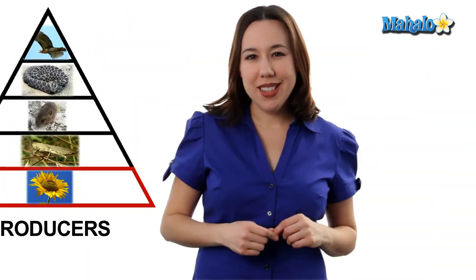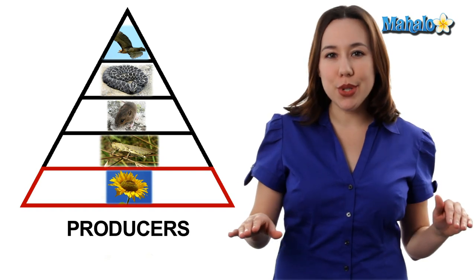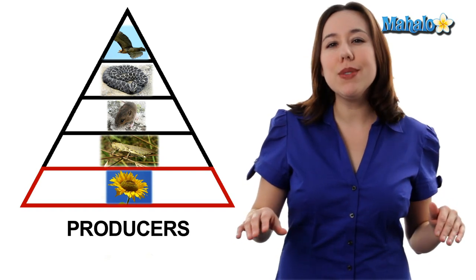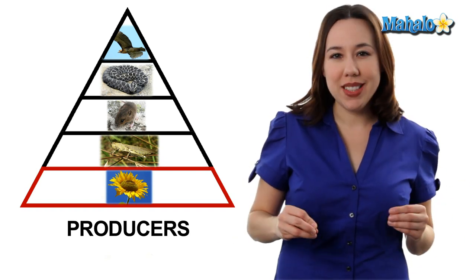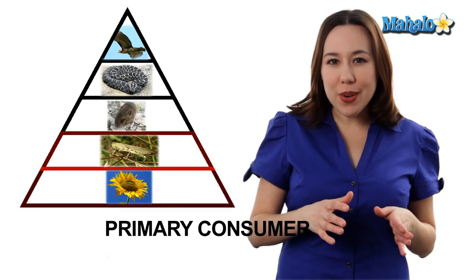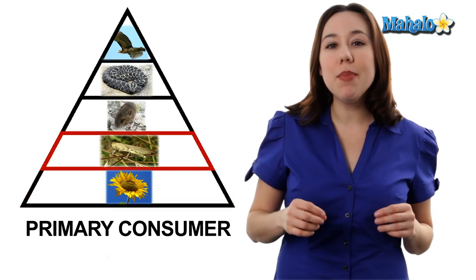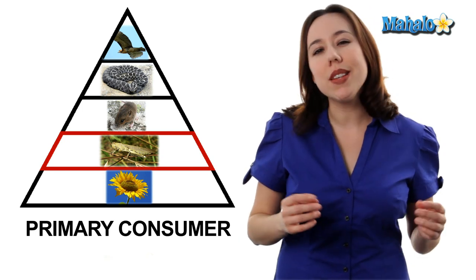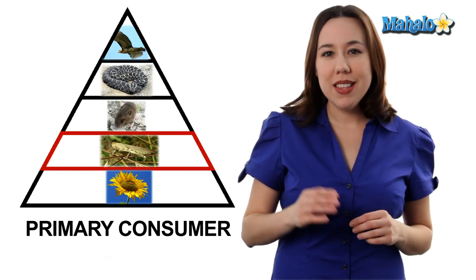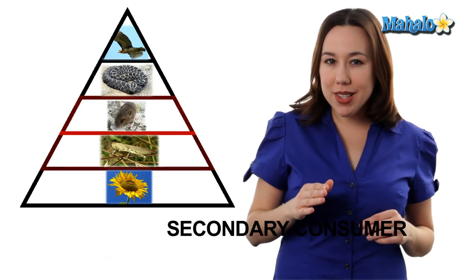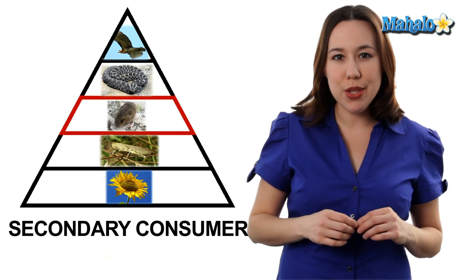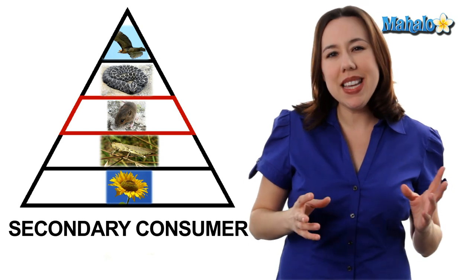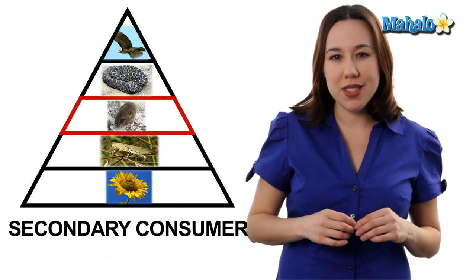Now let's use a real world example to illustrate our concept here. We're going to start at the bottom with our producers — let's use a sunflower. This sunflower is going to be eaten by a primary consumer; for our example, we'll say a grasshopper. This grasshopper is then going to be eaten by a secondary consumer, let's say a field mouse.